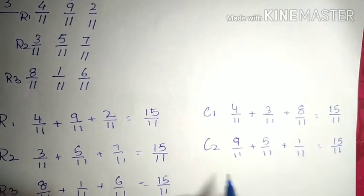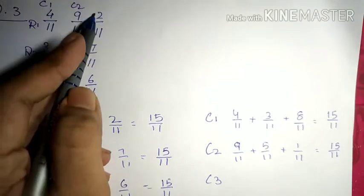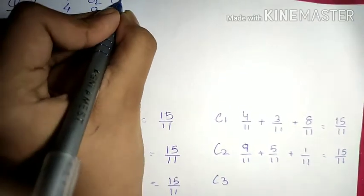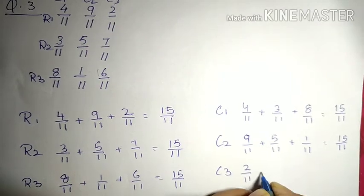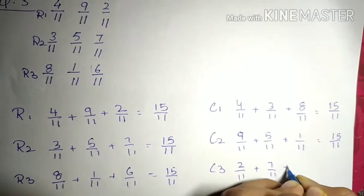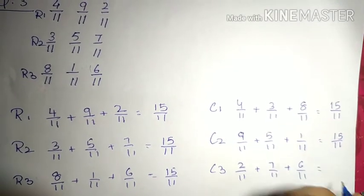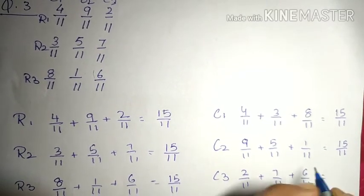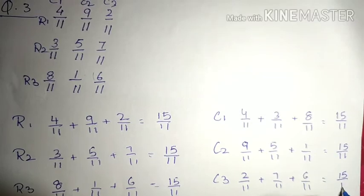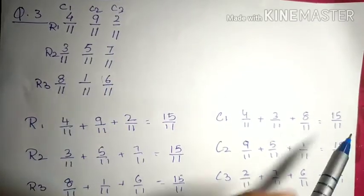Now column 3 is this one. Column 3 came 2/11 plus 7/11 plus 6/11. Now 6 plus 2 is 8, 8 plus 7 is 15. So this column is 15/11.